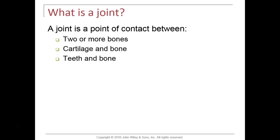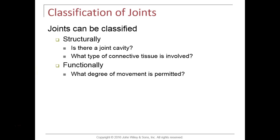Joints are points of contact either between two bones, or where we have cartilage and bone, or even our teeth in our mandible, maxilla, and jawbone. We're going to classify joints — or what we call articulations — in two ways. Structurally, we can classify joints based on whether or not there is a joint cavity, sometimes called a synovial cavity, between the adjoining bones, and what type of connective tissue holds the bones together.